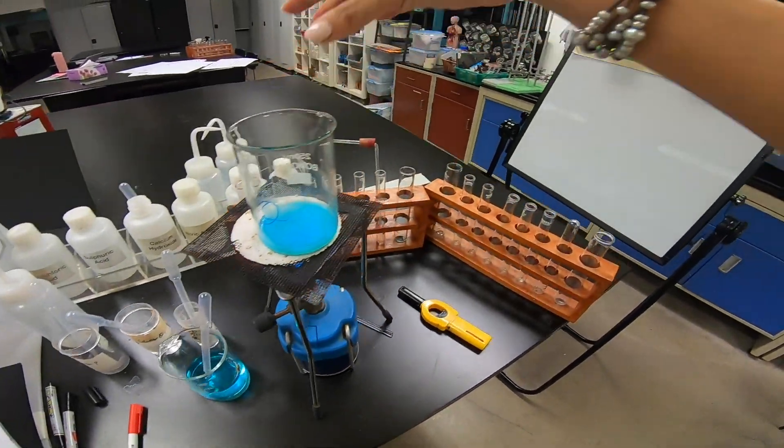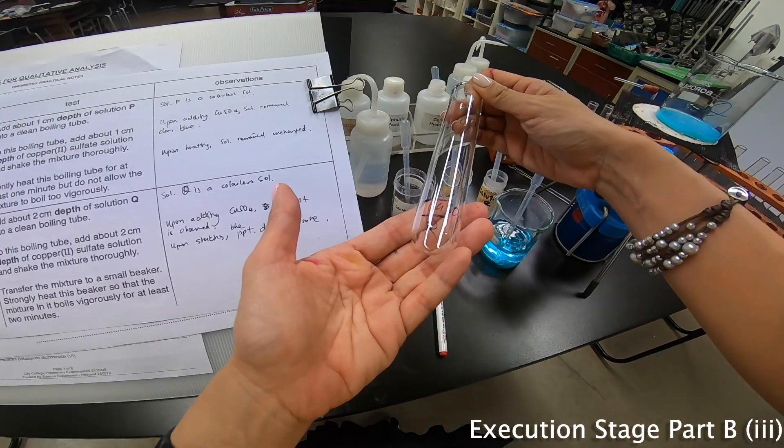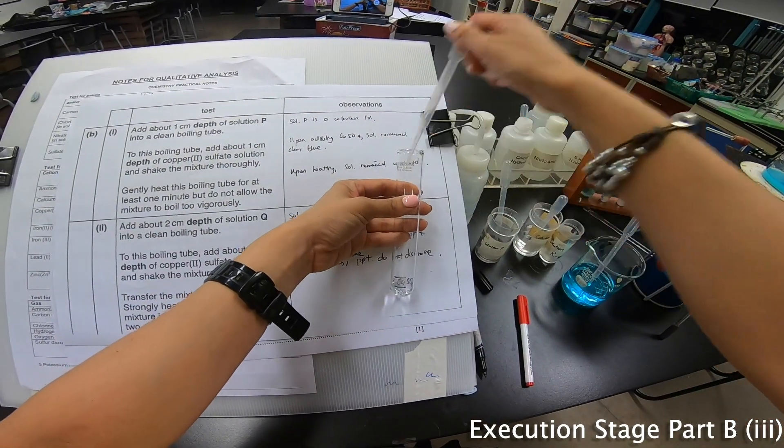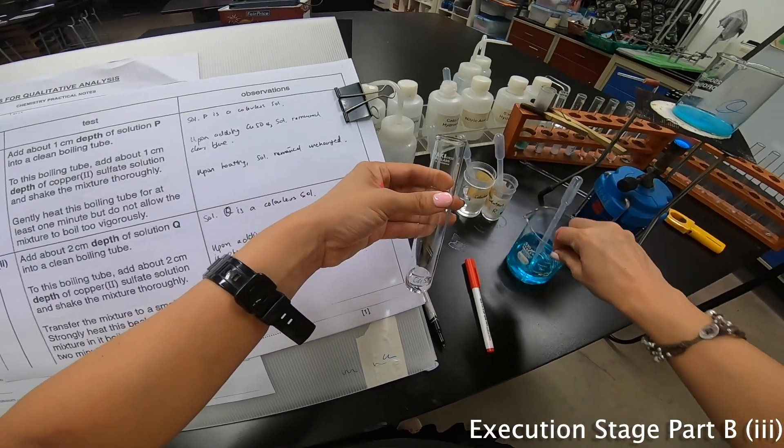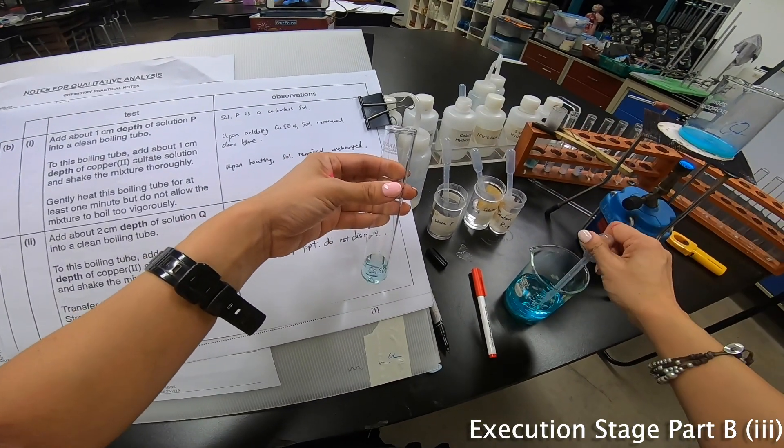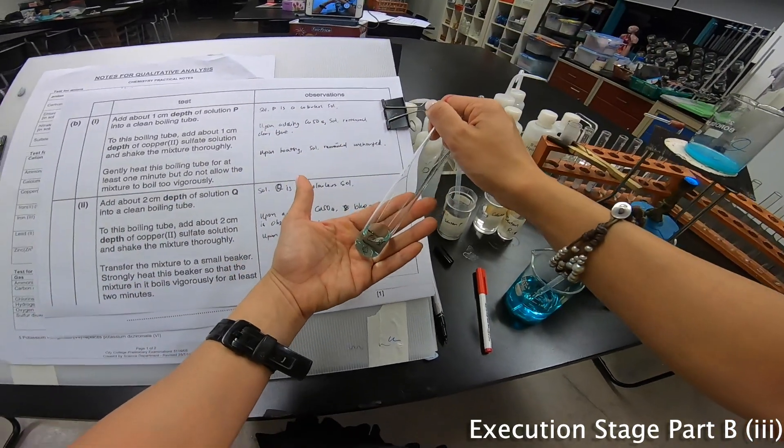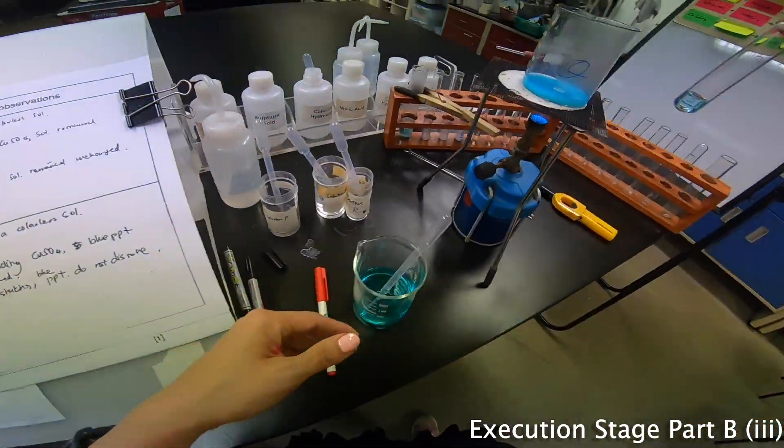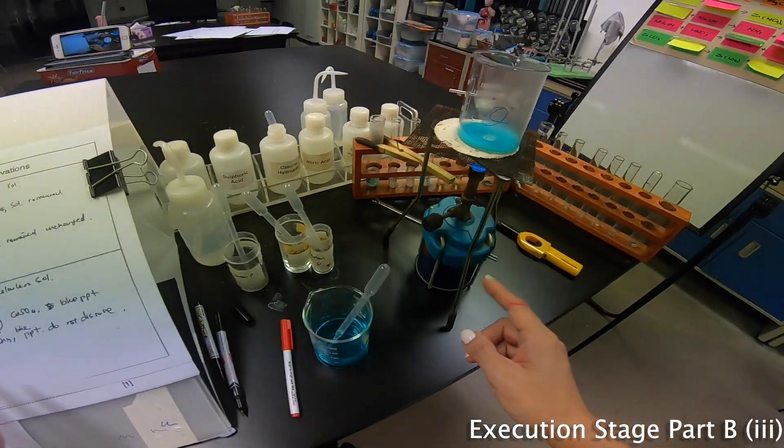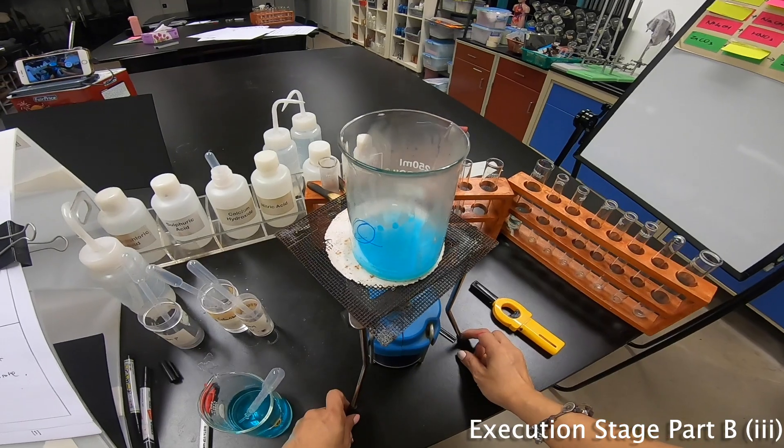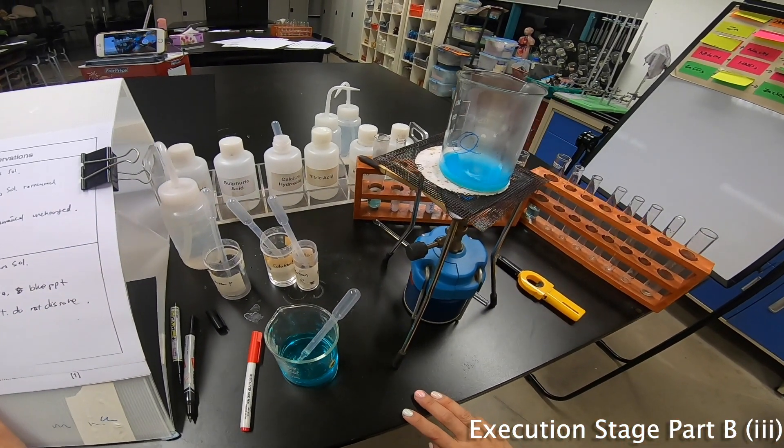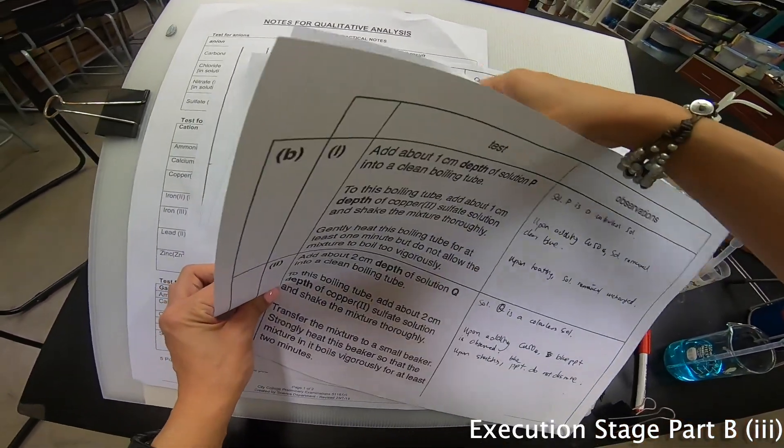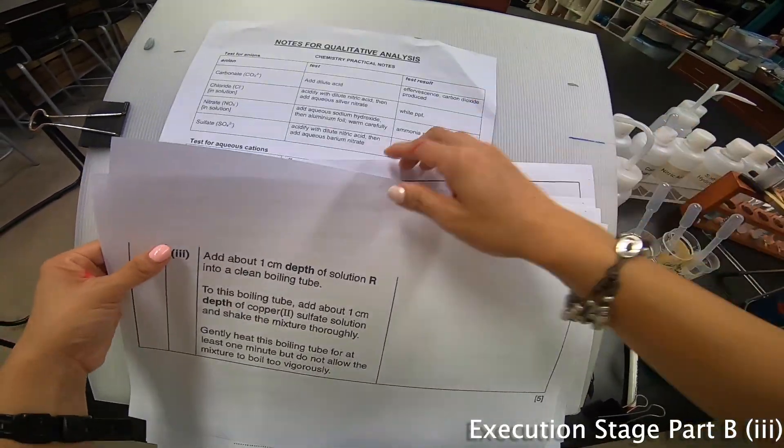Shake the mixture thoroughly. Upon shaking, blue PPT do not dissolve. Transfer the mixture and let's heat it for at least two minutes. So I'm letting it heat. So what is heating? Let me adjust this a little bit. I will move on to my next one, which is the last one, my R solution. So R is the same thing over here.